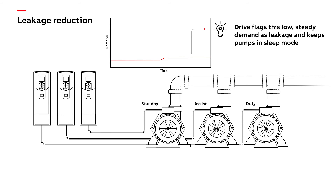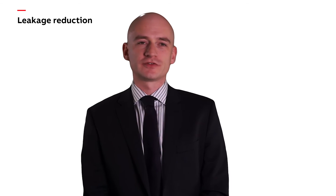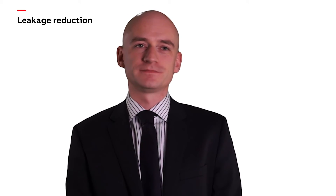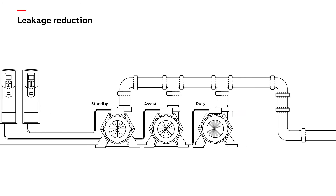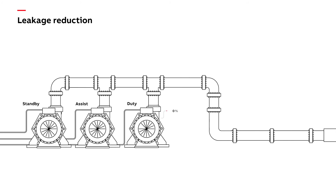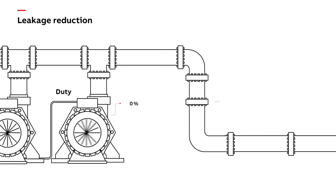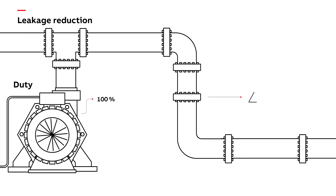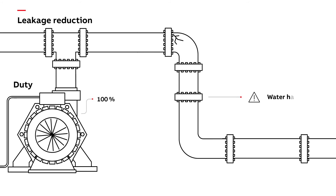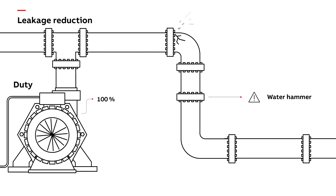Drives can also prevent leaks from occurring in the first place. Switching pumps on and off causes rapid changes in flow. These flow changes are followed by transients in pressure, causing an effect known as water hammer. This can damage pipes, pipe support, and causes leaks.